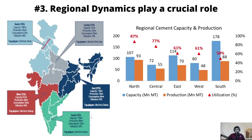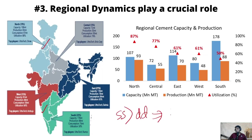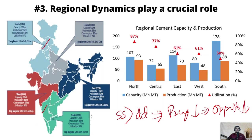Let's move to understanding cement's regional dynamics. Cement is bulky, so I cannot produce it in Punjab and consume it in Karnataka. We divide India into five regions — north, west, east, central, and south — and look at the overall capacity and production of each region. A simple economic principle: if supply is much higher than demand, your pricing power is low and your ability to earn profits is low. Simplified: if the capacity utilization in a particular region is high it is good; if it is low it is bad.